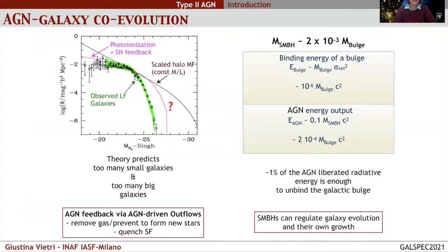This project is inserted in the framework of AGN galactic evolution. AGN feedback was invoked to reproduce the observable properties of galaxies, for example the luminosity function. The shape of the observable luminosity function of galaxies and that of the scaled halo mass function, which is the predicted one, are different. The assumption that stellar mass follows halo mass leads to too many small galaxies and too many big, extremely bright galaxies.